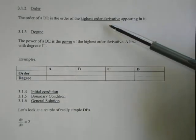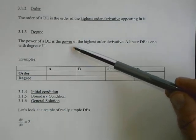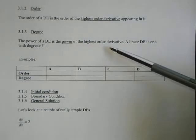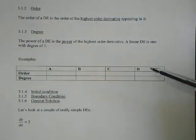Order is the highest order derivative, and degree is the power of that particular derivative. So we're going to have a look at the four examples from the previous page, and ask what order they are and what degree they are.